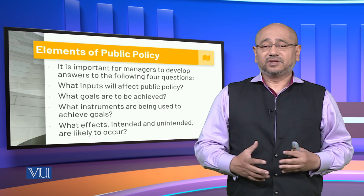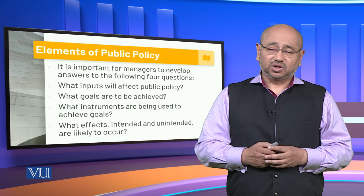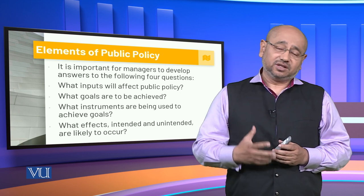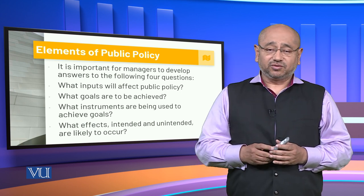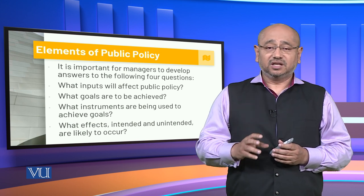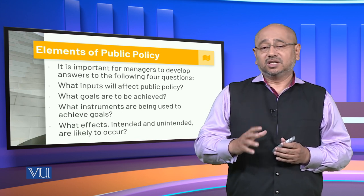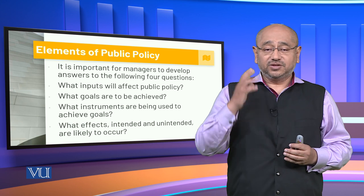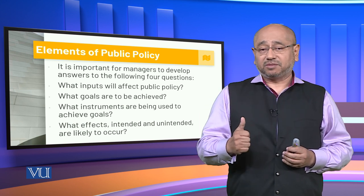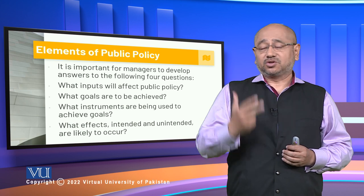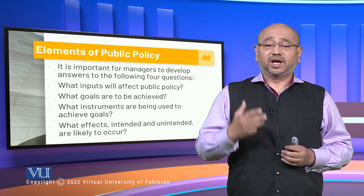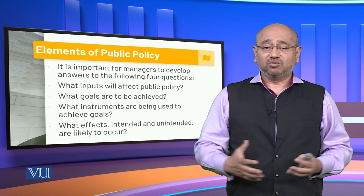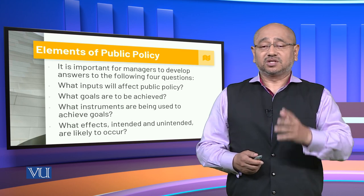Public policy is a very important dimension of corporate governance because it directly or indirectly tends to affect different organizations, their current businesses and their future businesses. Therefore, organizations are very important stakeholders in defining and enumerating the public policies related to different sectors and circumstances. These four questions — what inputs will affect public policy, what goals are to be achieved, what instruments are being used to achieve those goals, and what are the intended and unintended effects likely to occur — define the different elements of public policy.